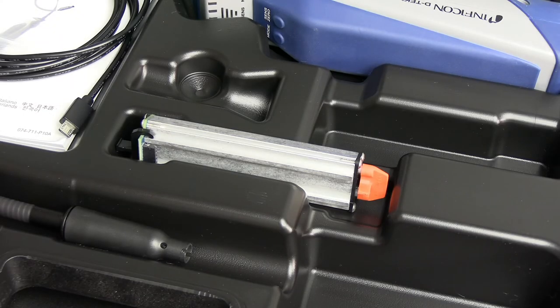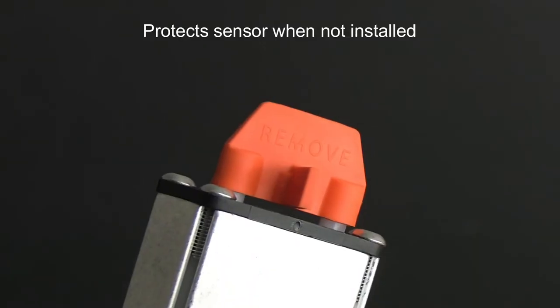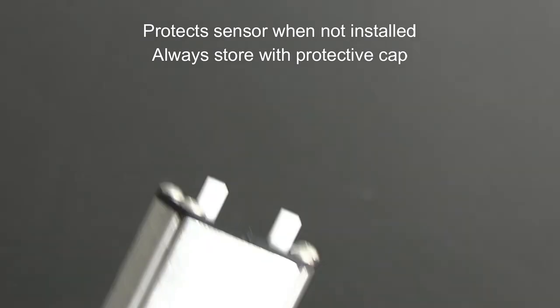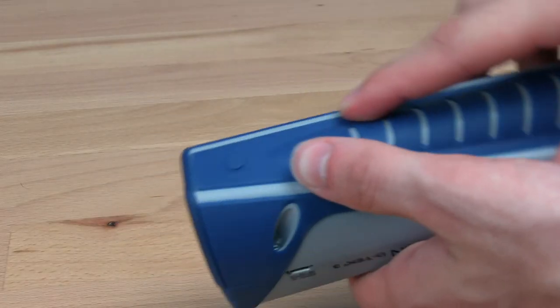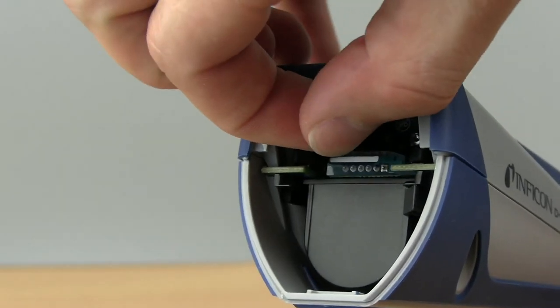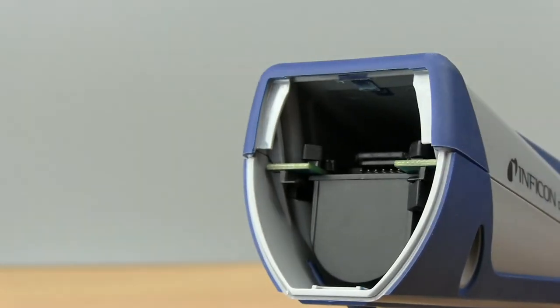Changing sensors with DTEK3 is simple. This makes switching to the optional CO2 sensor quick and easy. To remove the sensor, press the eject button and remove the battery door. Hold the sensor release tab and gently pull the sensor out.